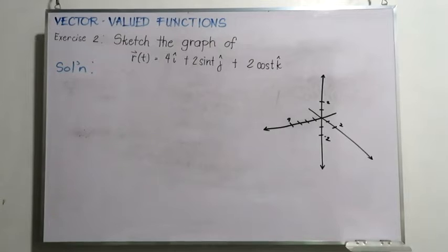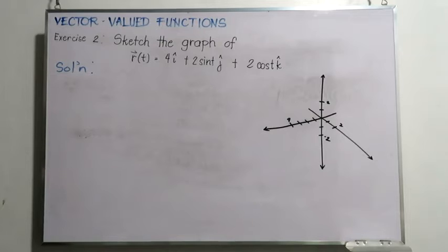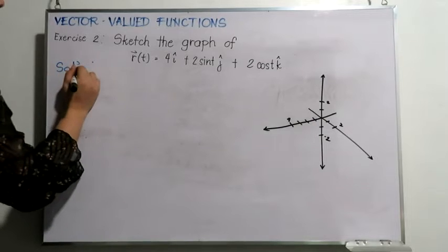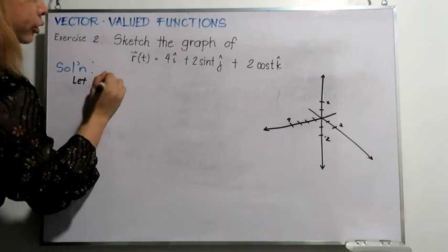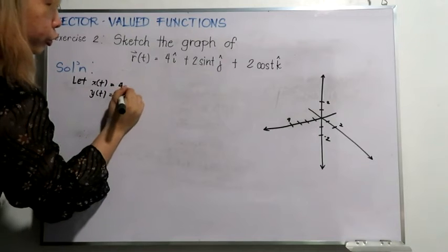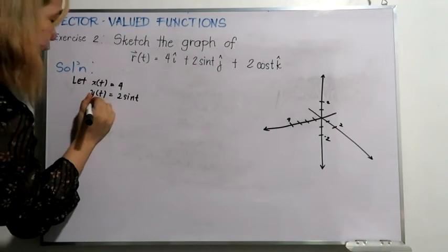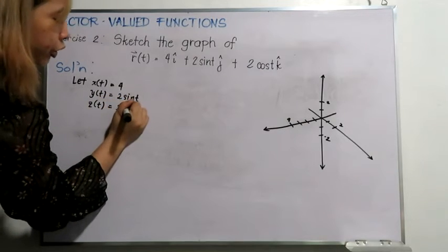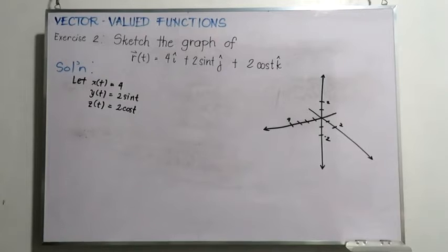Moving on to our next exercise, we need to sketch the graph of the given vector-valued function defined by 4 î plus 2 sine(t) ĵ plus 2 cosine(t) k̂. Let us first write down the parametric equations of this vector function. So let x of t be equal to 4, y of t be equal to 2 sine(t), and z of t be equal to 2 cosine(t). Since the x component is simply a constant, we may infer that the graph of the curve lies on the plane x equals 4.